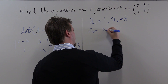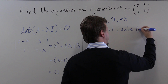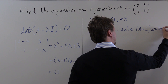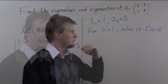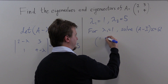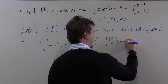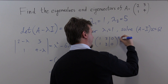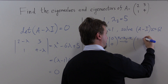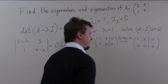For lambda₁ equals 1, we need to solve the equation (A minus I) times our vector equals zero. As an augmented matrix, this is the system 1, 3, 1, 3 augmented with 0, 0. We can easily row reduce that — take row 2 and make it row 2 minus row 1, giving the matrix 1, 3, 0, 0, augmented with 0, 0.